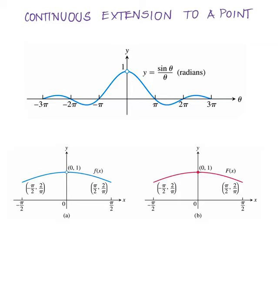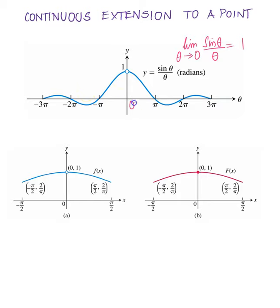This is called continuous extension to a point. We've seen the graph of y = sin(θ)/θ before, and the limit of sin(θ)/θ as θ approaches 0 is 1 — but there is an open circle at that point. The function is continuous everywhere else except at θ = 0. Under removable discontinuity, if we can fill that hole, we can make it continuous.